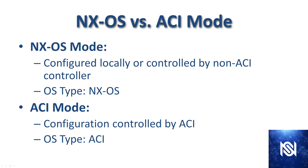If you put a device into ACI mode, conversely, it means that you can no longer configure it locally. The device itself would basically go under complete control of ACI, and its operating system type would be ACI. The main idea is that the configuration is either controlled locally in NXOS mode, or in ACI mode it just becomes a part of ACI.